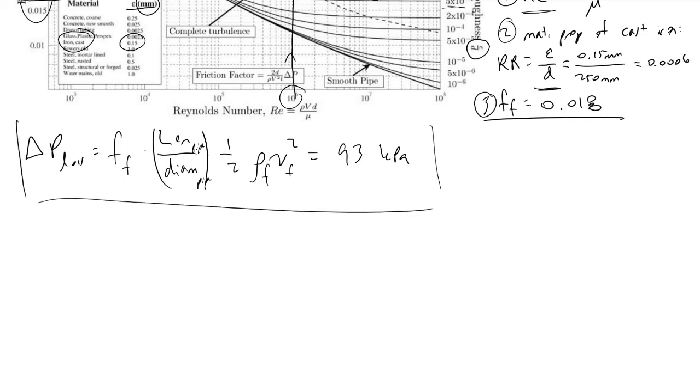93 kilopascals is approximately slightly less than one atmosphere, so I'll call it 0.9 atmospheres. This is the kind of pressure loss due to frictional losses we would expect to see if we were flowing water through a pipe at this rate.